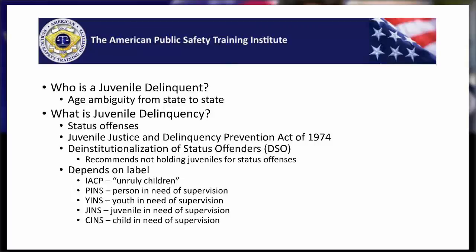In terms of labels, the International Association of Chiefs of Police argued that status offenders should be labeled as 'unruly children.' Other states classified those who commit status offenses as a PINS — a person in need of supervision — or a JINS, a juvenile in need of supervision, or a SINS, a child in need of supervision.